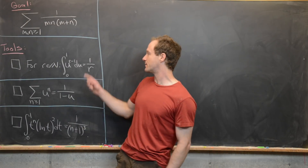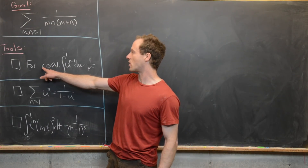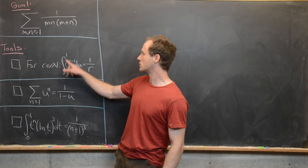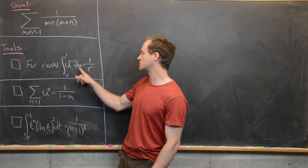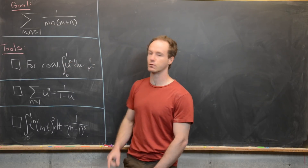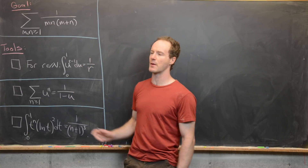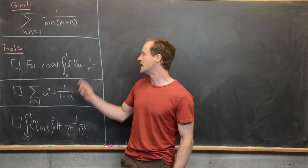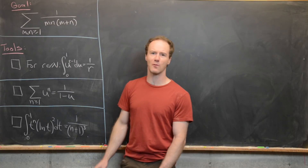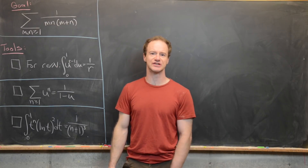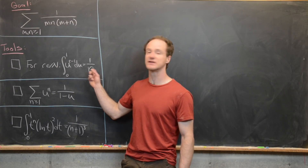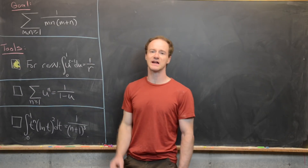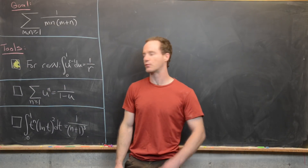The first tool is fairly simple. It says that for all natural numbers r, the integral from 0 to 1 of u to the r minus 1 du is 1 over r. This just follows from the power rule for antiderivatives, and it's clearly true for more values than just natural numbers, but that's what we'll use for our proof.